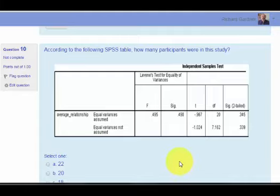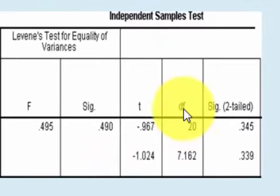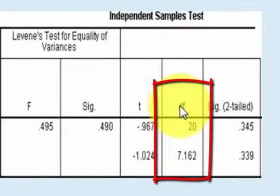You'll notice it doesn't say anything about sample size in this box here. What I'm hoping you would realize is that degrees of freedom is strongly related to sample size.